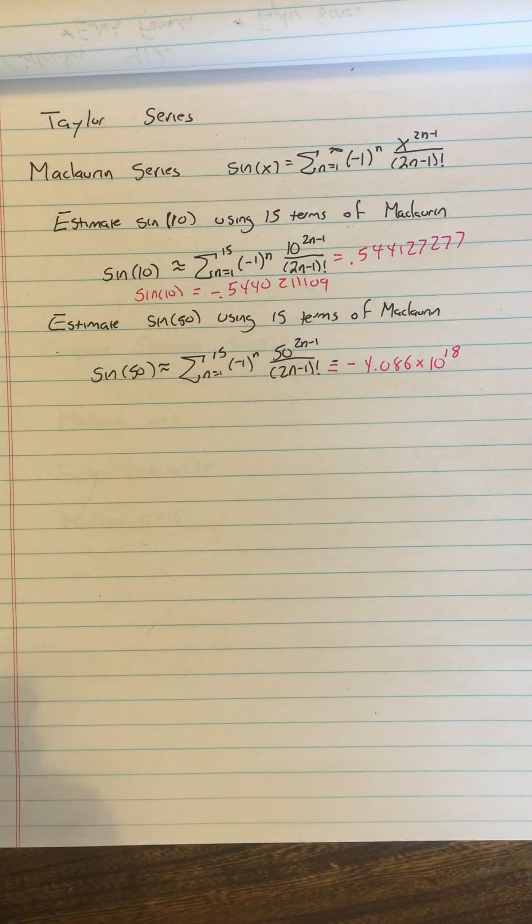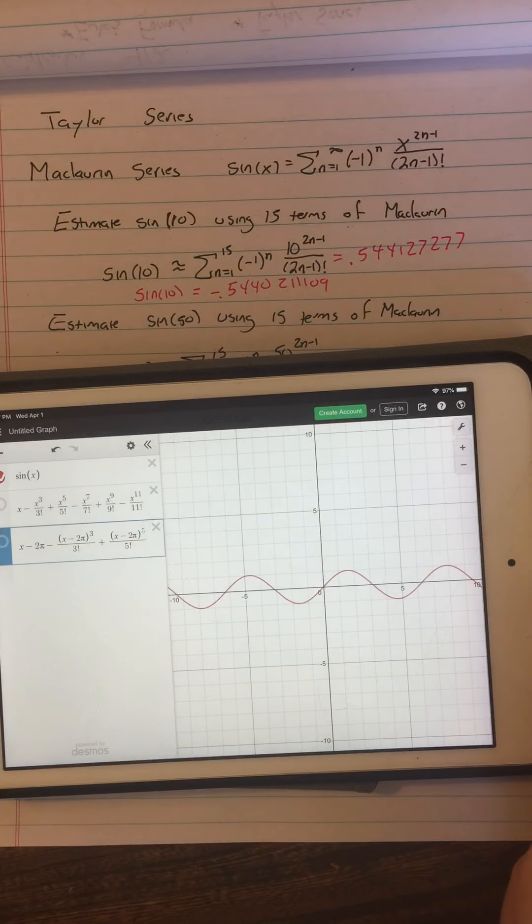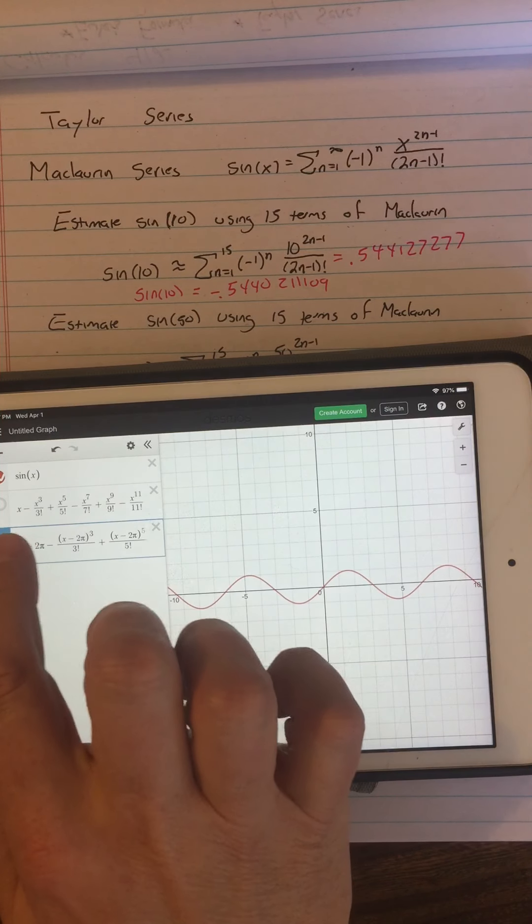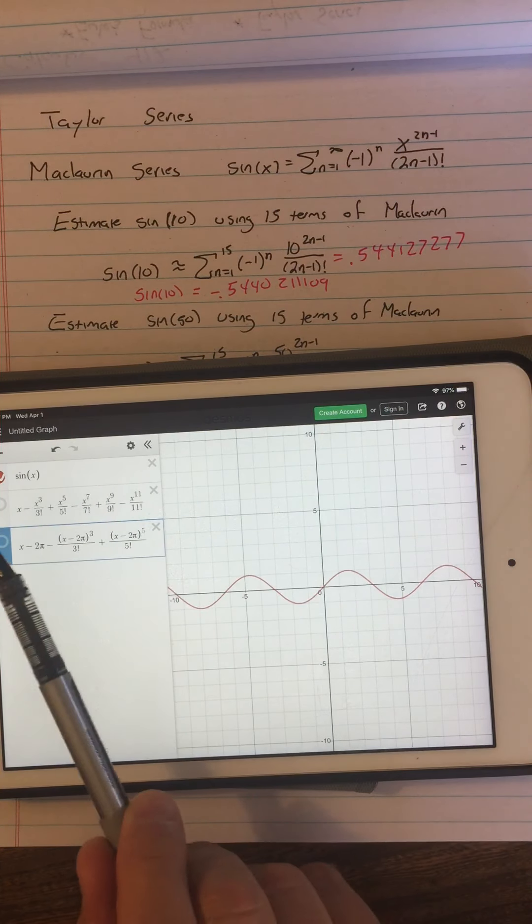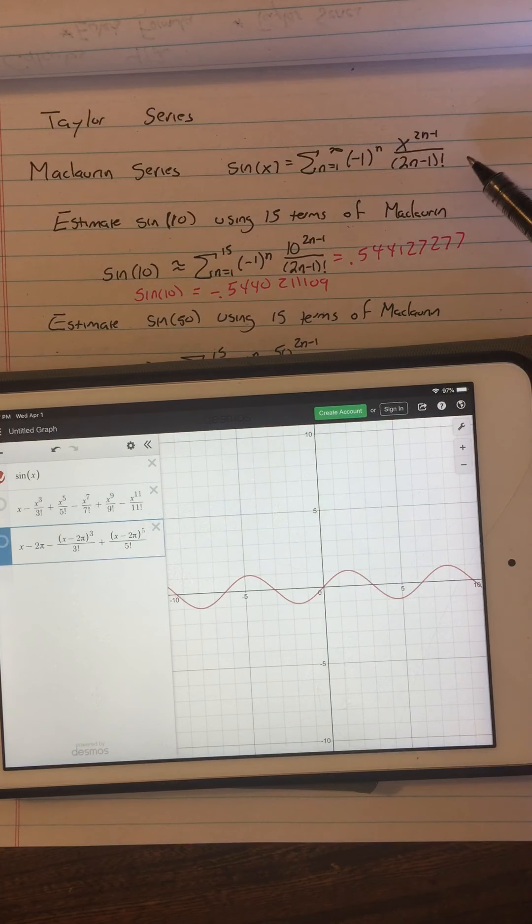So I showed you what the picture of the Maclaurin series looked like before, and so here's the function sine of x, and here's, if you look at this side of the screen, here's x minus x cubed plus x fifth over 5 factorial. That's our Maclaurin series that is given by this expression.